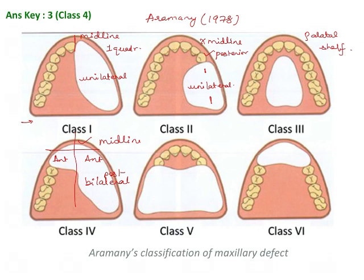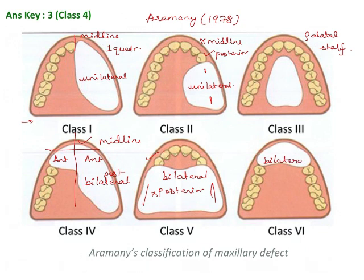Class 5 is a bilateral defect where the posterior teeth are resected — only anterior teeth remain. The opposite of that is Class 6: bilateral with anterior teeth missing and posterior teeth present.